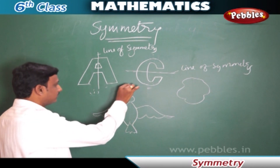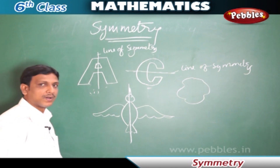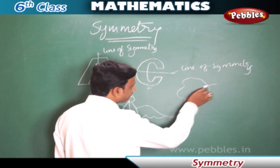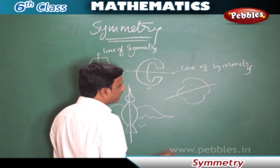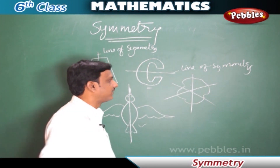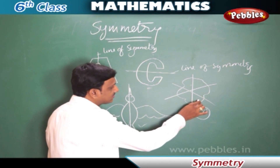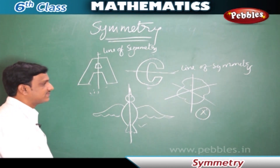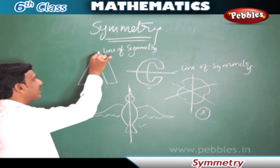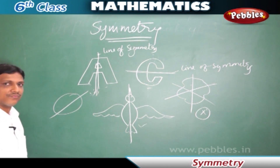In the same way, here if we draw a line we can divide this figure into two identical parts, so this figure also has got line symmetry. But if we draw a line in any direction on the next figure, we cannot make the two halves identical — they are not coinciding. So this is a non-symmetrical figure. The line of symmetry can be either vertical, horizontal, or diagonal.